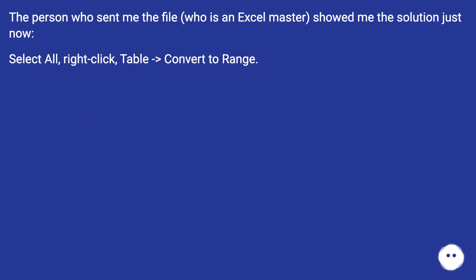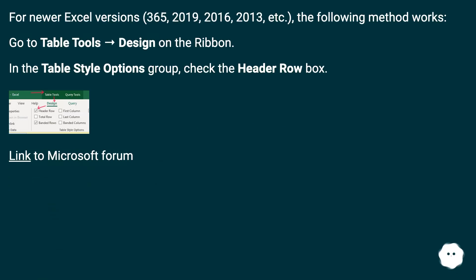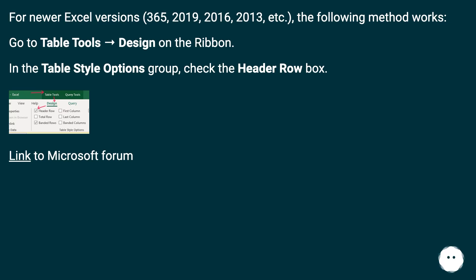The person who sent me the file, who is an Excel master, showed me the solution. For newer Excel versions — 365, 2019, 2016, 2013, etc. — the following method works: Go to Table Tools Design on the ribbon. In the Table Style Options group, check the Header Row box. Link to Microsoft forum.